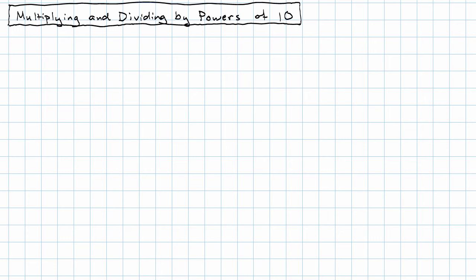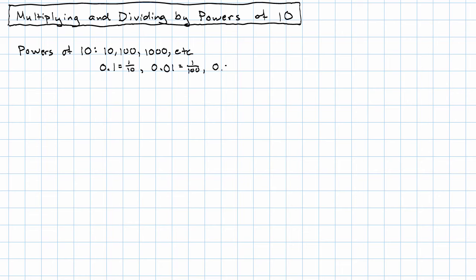When talking about powers of 10, I mean the usual powers of 10, but I also mean the decimals that are just 1 over a power of 10: 0.1 (one tenth), 0.01 (one hundredth), 0.001 (one thousandth), and so on. The reason for including these among the powers of 10 will become clear later, but for now it's simplest to notice that they are also very easy to multiply and divide decimals by.